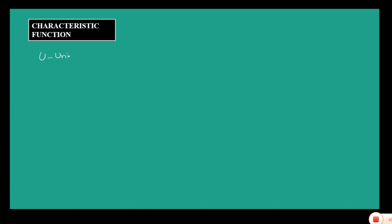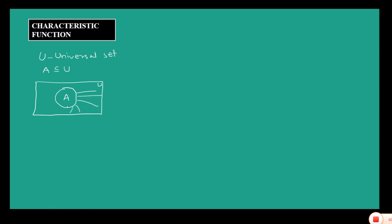Before we define characteristic function, I would like to draw a Venn diagram. Suppose U is the universal set and A is a set which is a subset of this universal set U. According to the Venn diagram, this box represents the universal set U and the circle represents set A. The remaining part of the box is nothing but the complement of A, or U minus A.